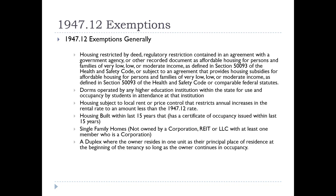There are six exemptions under 1947.12, and they're fewer than the ones in 1946.2. First is housing restricted by deed, regulatory restriction, or containing an agreement by a government entity for persons and families of very low, low, or moderate income.